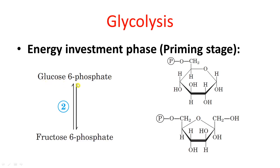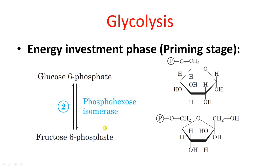In step 2, glucose-6-phosphate is converted into fructose-6-phosphate. Comparing the two structures, the number of carbons, hydrogens, oxygens, and phosphate groups are identical — only the structure differs. This means glucose-6-phosphate and fructose-6-phosphate are isomers of each other, and the enzyme catalyzing this reaction is phosphohexose isomerase.